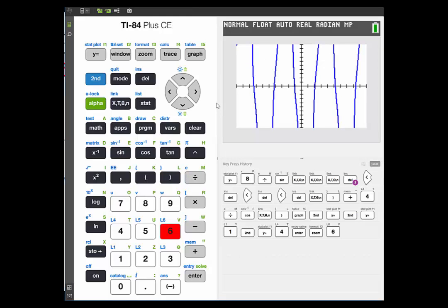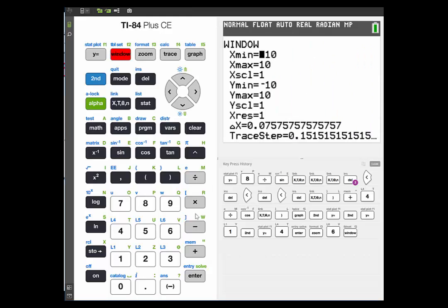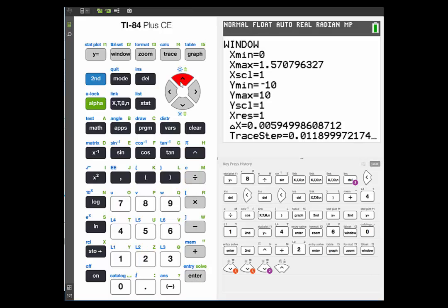And we want to graph this for theta from 0 to pi over 2. So we're going to press window and then make our x minimum 0 and our x maximum pi over 2. So we'll click second pi divided by 2. And let's set our y minimum to 0 and our y maximum to 50. Then click graph.